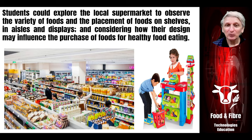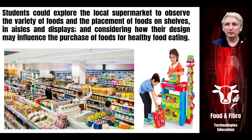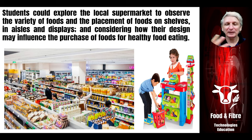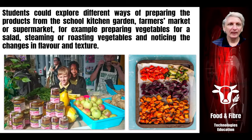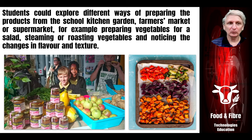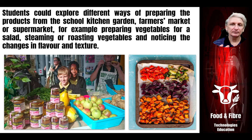Students can explore supermarkets and food distribution locations such as websites — how they are set up to help us find and locate food, but also how they advertise food and whether various advertising techniques impact upon healthy eating choices. Students can also look at different ways of preparing foods, particularly if you've got a school garden, taking raw resources and turning them into various prepared food items such as drying, roasting, steaming or making a salad — and how preparation affects the taste and texture of food.